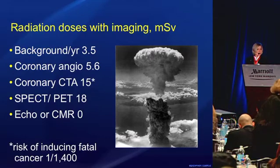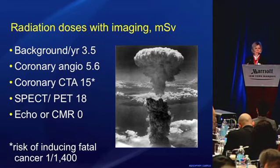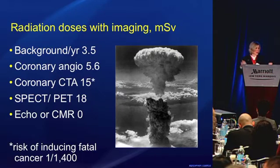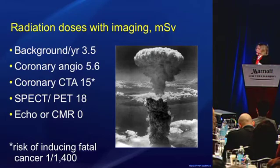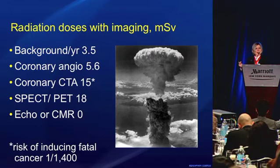This shows the comparative radiation doses with these different imaging tests. The people who use ionizing radiation say it's not so bad — you get 3.5 millisieverts per year from background anyway. But there are significant amounts of radiation with coronary angiography, coronary CTA, SPECT, and PET. It's only echo and CMR that have none. In fact, the radiation doses might even be higher than shown depending on the imaging protocol utilized.